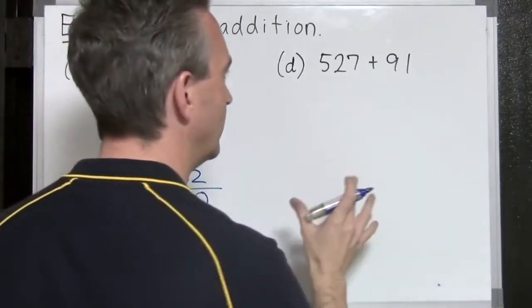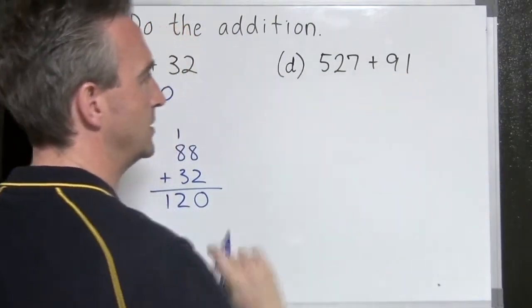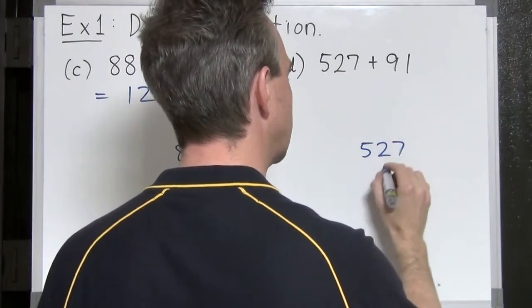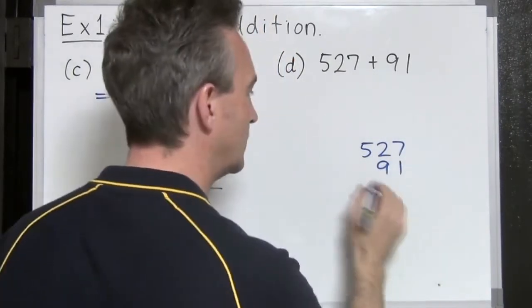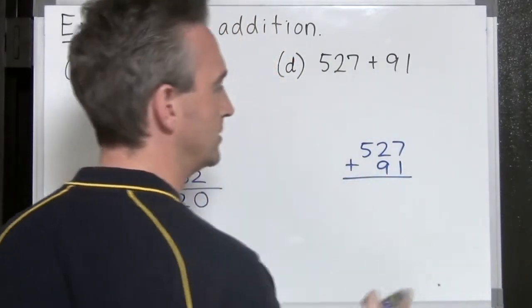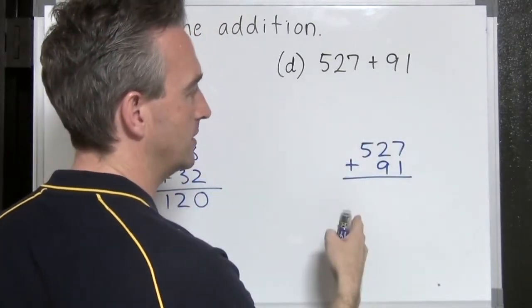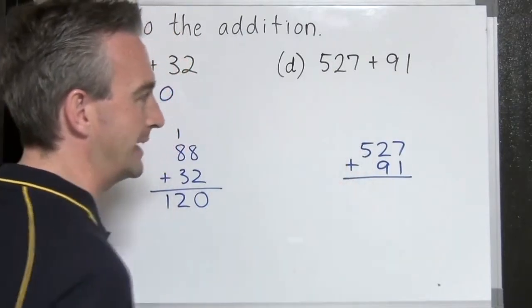On to one more. This time, we have a number in its hundreds plus a number in its tens. Adding them vertically. 527 plus 91. Again, we need to align them correctly vertically. So the 1s are aligned. The tens are aligned. And the hundreds are aligned. But the 91 doesn't have any hundreds. So that just stays blank.